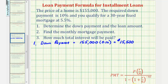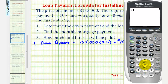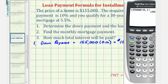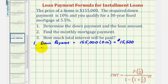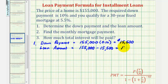Of course, if we want to check this, we can use a calculator. $155,000 times 0.10 is $15,500. So, if this is the down payment, then the loan amount is equal to the price of the home, $155,000, minus the down payment. This gives us $139,500 as the loan amount.